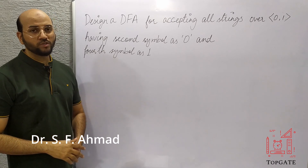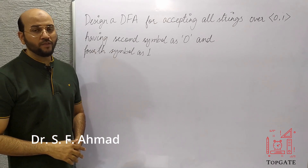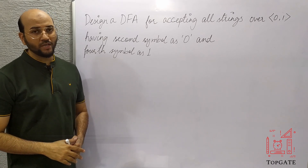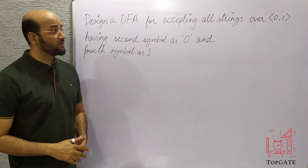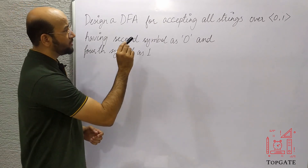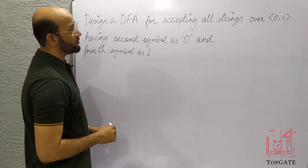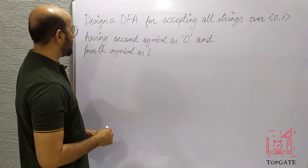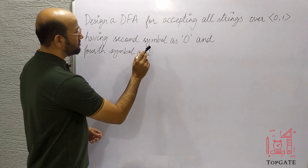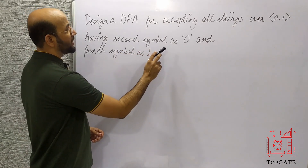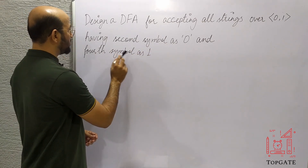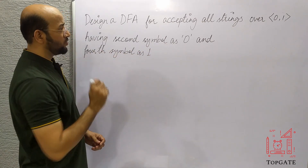Hello students, welcome to the channel TopGate. In this video, I will discuss one more problem of DFA — that is, to design a DFA for accepting all strings over the alphabet {0,1} having the second symbol of the string as 0 and the fourth symbol as 1.